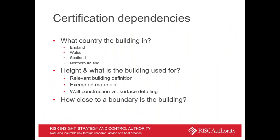Certification within the UK is complex because we have different rules relevant to England, Ireland, Scotland and Wales. The key issues are: what country, what height the building is, and what the building is used for. Within English building regulations we have the concept of 'relevant buildings', materials which are exempted when the combustibility ban is enforced, wall construction and surface detailing — it's very difficult from reading the building regulations to determine what a wall actually is. A key factor is how close to the boundary the building is, as that can affect fire spread to other buildings.